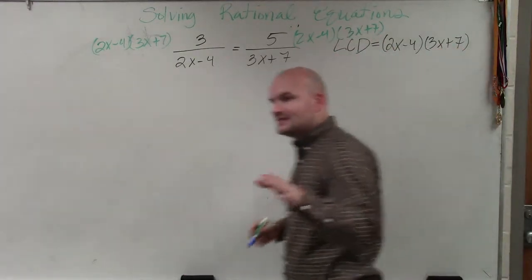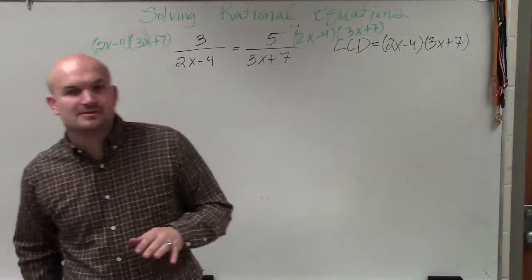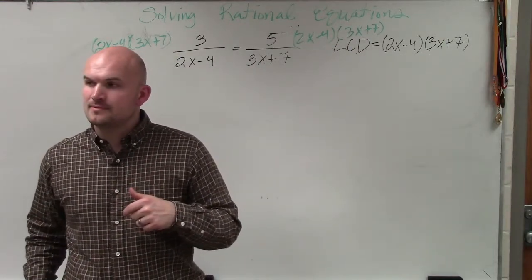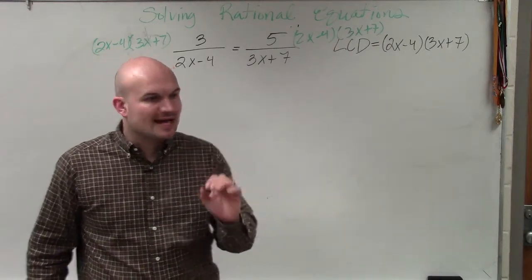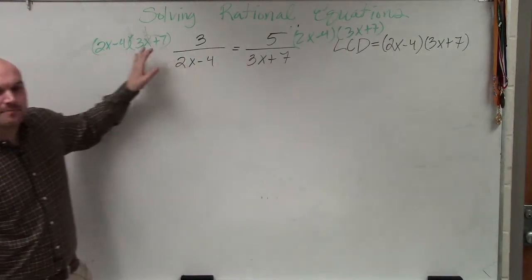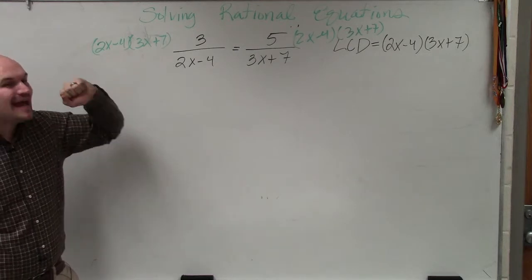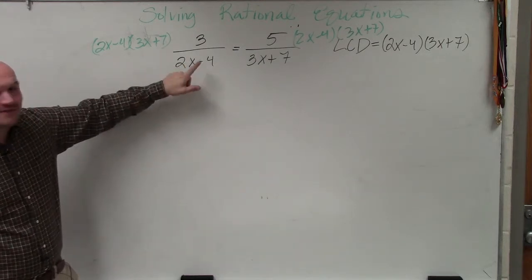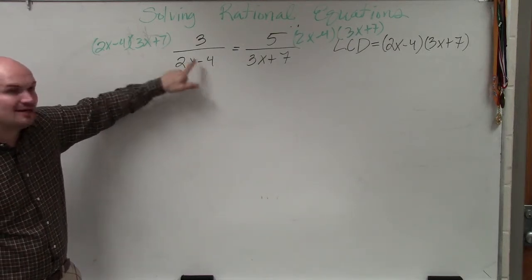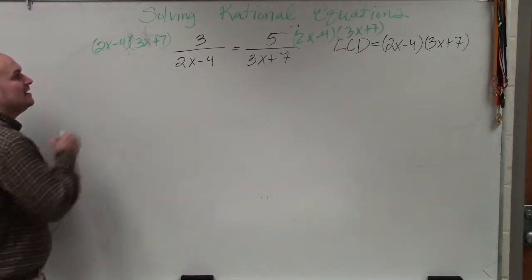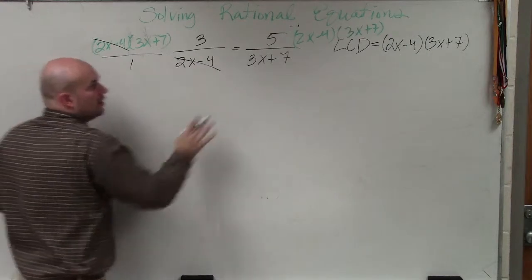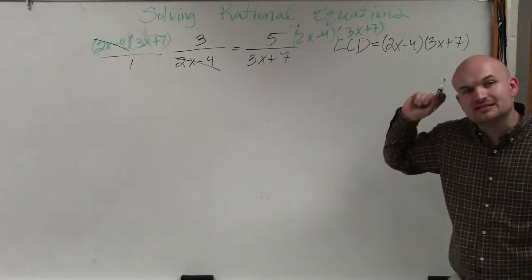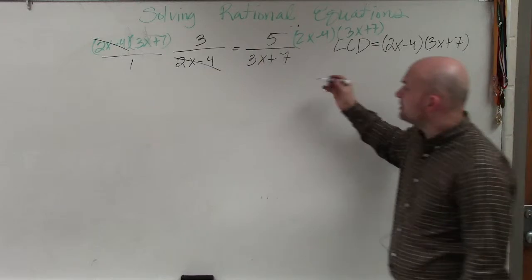But what's going to happen is, here's what happens. So you take your LCD, and you multiply it by both terms in the numerator. Now, what happens is, since you have the same term in the denominator and in the numerator, they don't cancel out. They divide to 1. Over here, you have 3x plus 7 in the denominator and 3x plus 7 in the numerator. So those divide to 1.